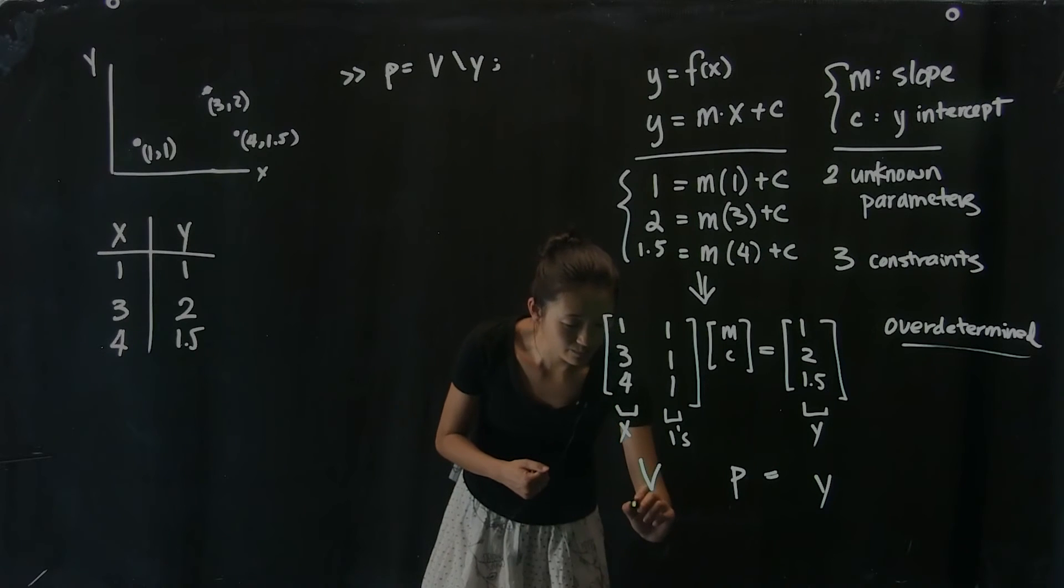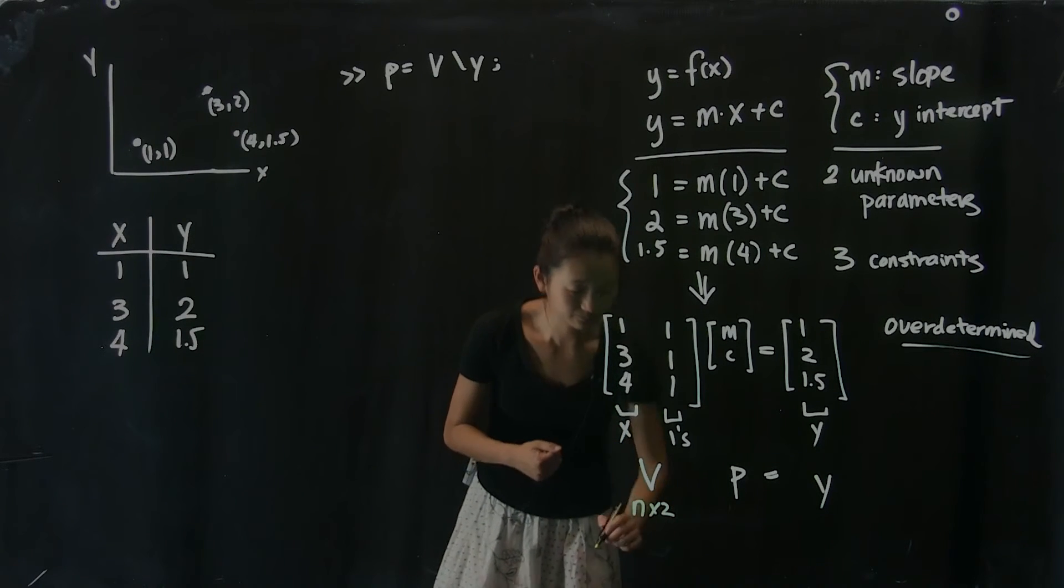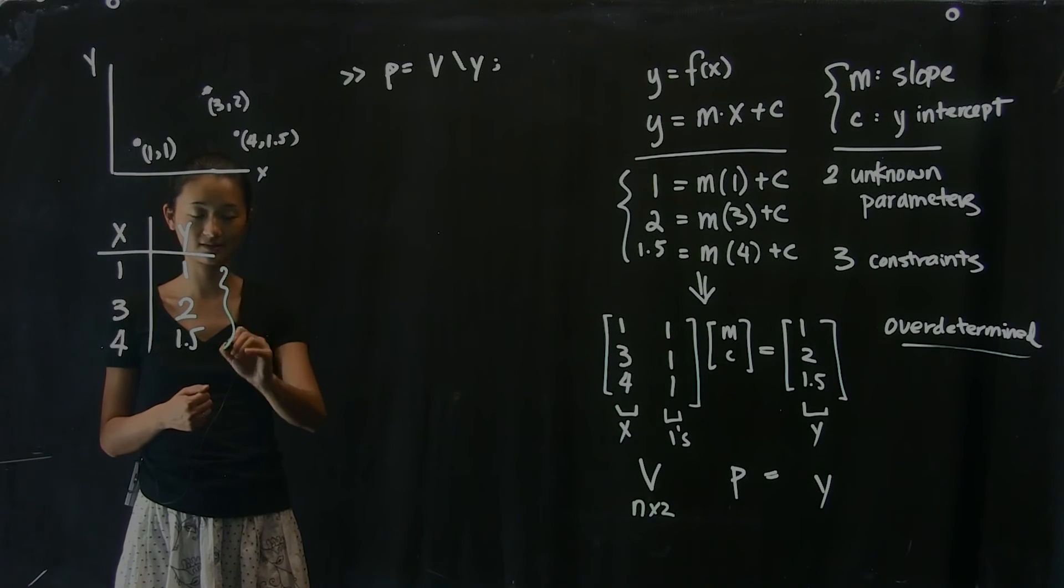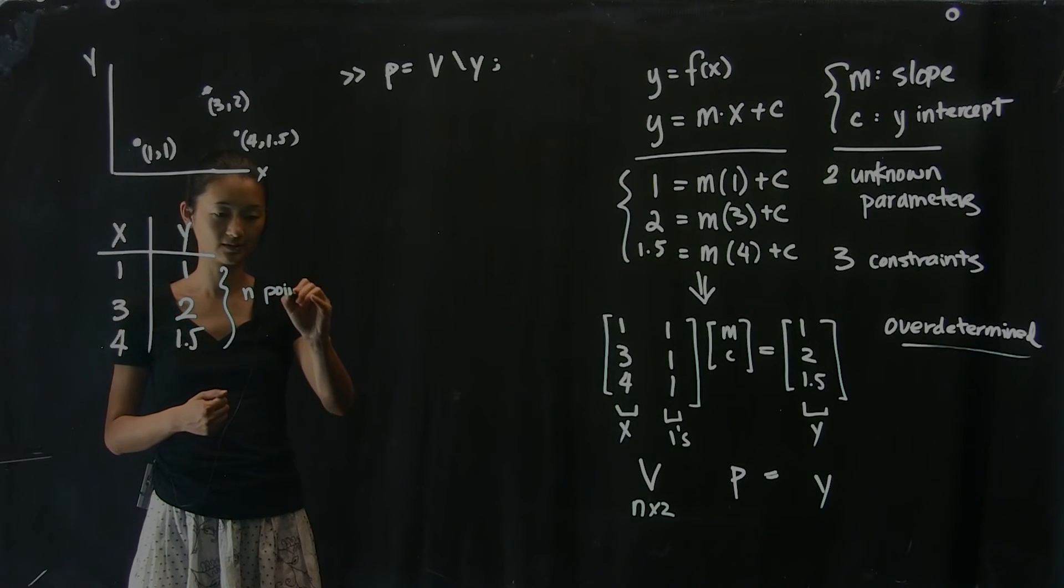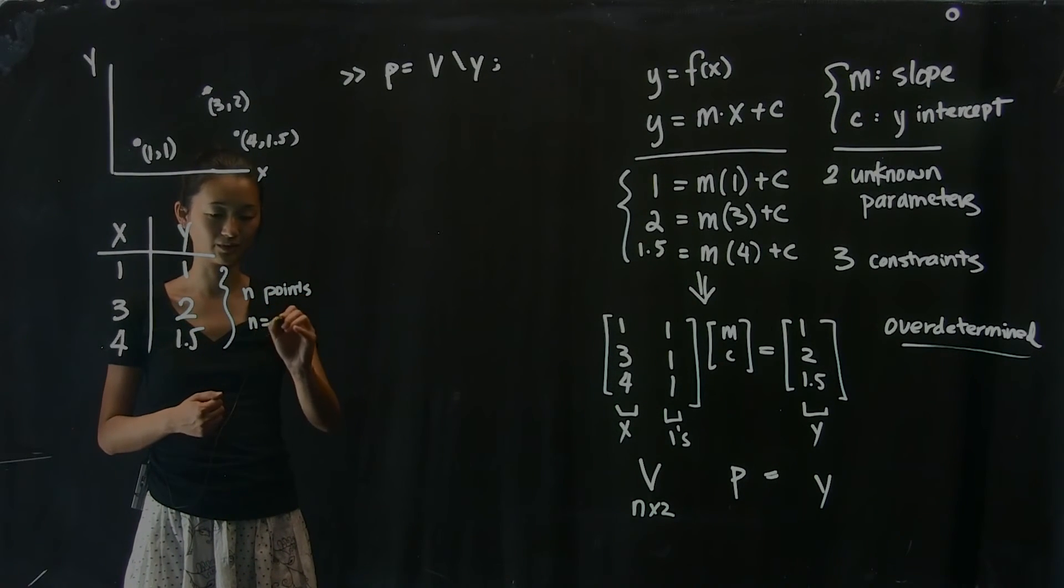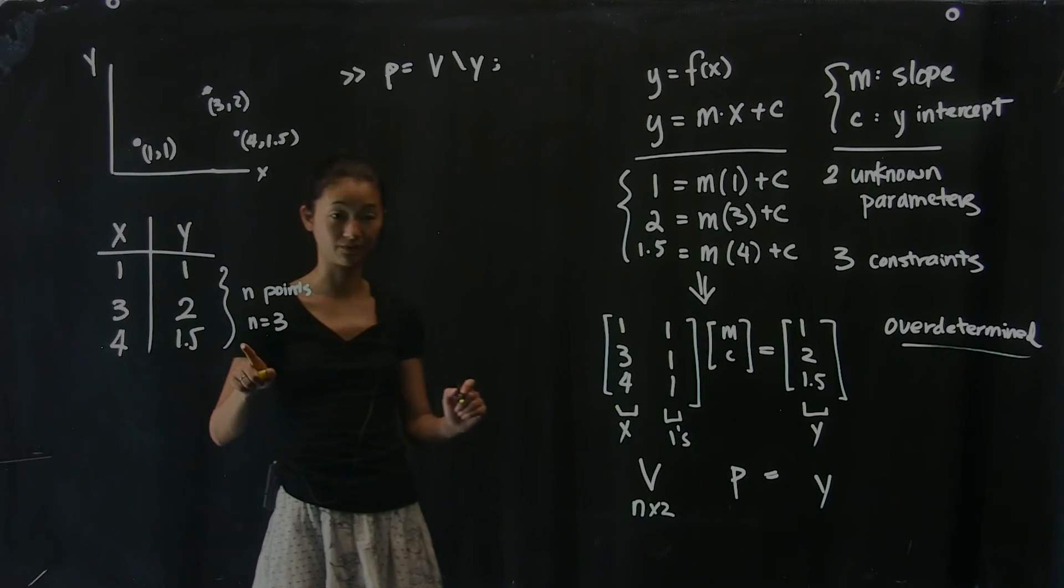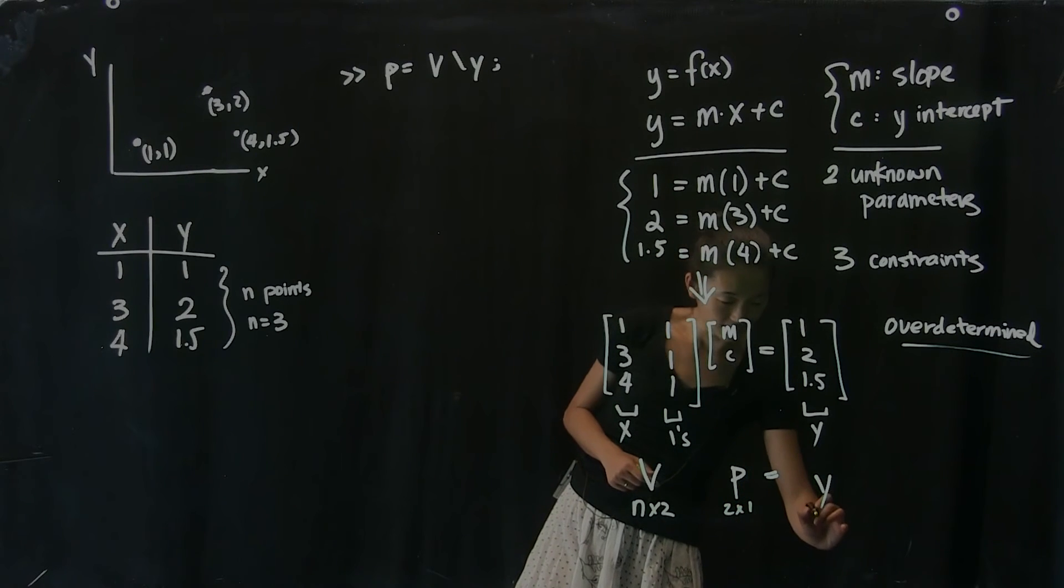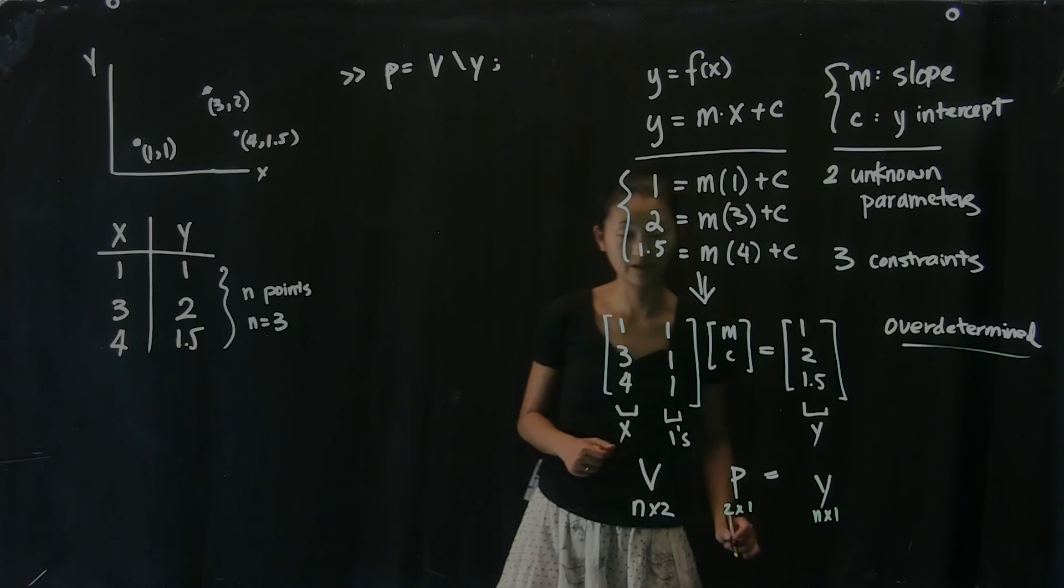V is going to be n by 2, where n is the number of data points we have. In this particular case, there's n points. And we're doing the case on the board where n equals 3. But n could be a large number.